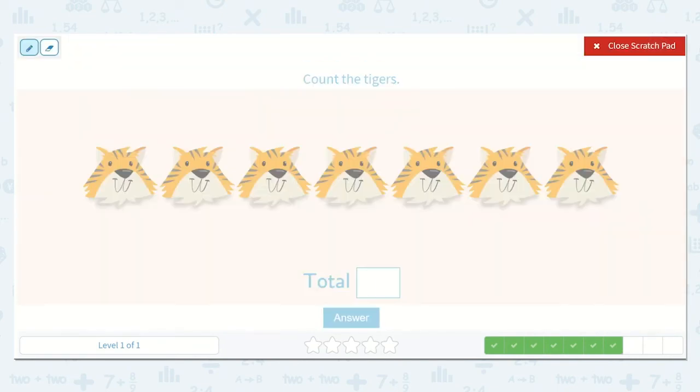Alright, let's count the tigers. 1, 2, 3, 4, 5, 6, 7. There are 7 tigers.